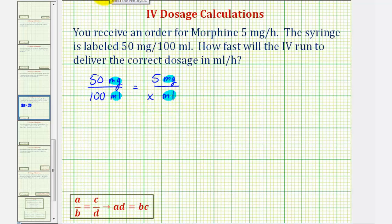But in our case, we can go ahead and cross multiply and solve for X. When cross multiplying, we'll leave off the units. So 50 times X would be 50X must equal 100 times 5, which is 500.